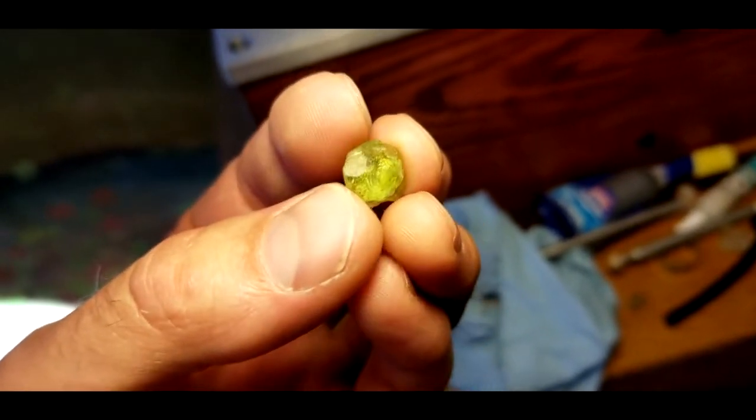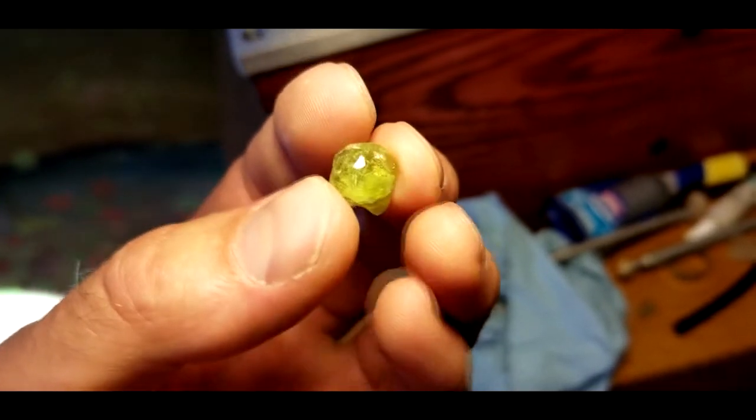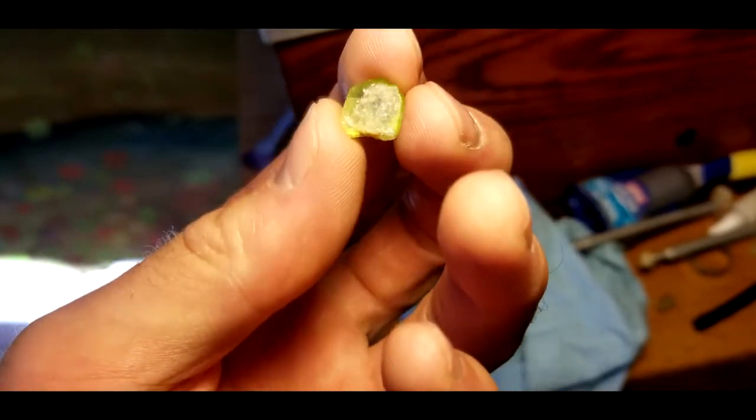Okay, this is a piece of peridot that I cut and polished. It's just the back side. Now I'm going to flip it over and cut and polish this side.